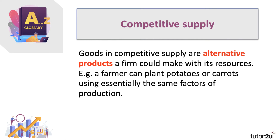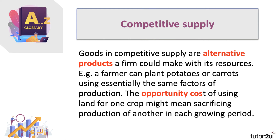A farmer, for example, can choose which crop to plant and harvest using essentially the same factors of production, including the land and perhaps the fixed capital available to the farmer. The opportunity cost for the farmer in switching more resources to one crop might mean having to sacrifice production of another crop in each growing period. So the choices a farmer makes about which crop to go for involves a decision about competitive supply.